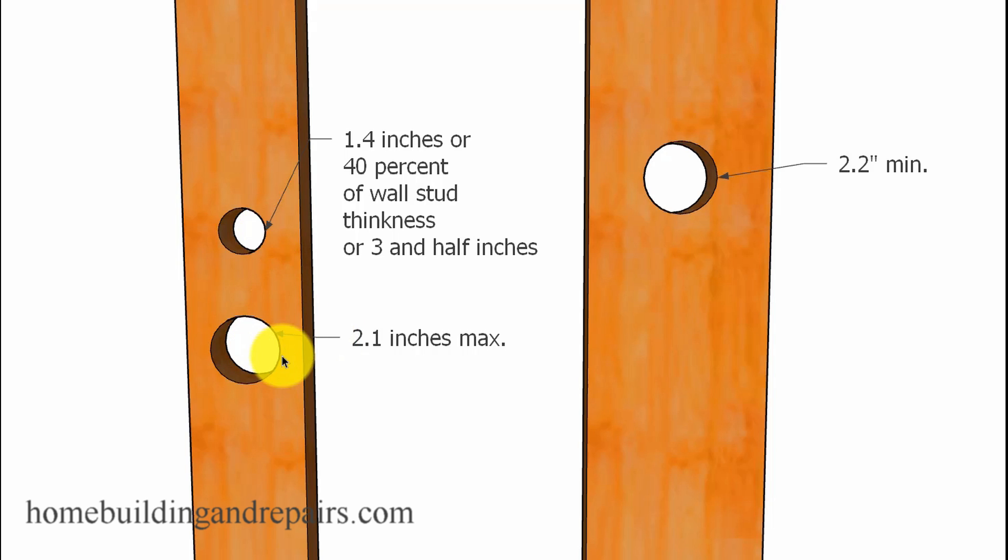So between 40 and 60 percent you're going to need to double the studs up. On a two by six, here you can see that you could run an inch and a half vent pipe through it without a problem.